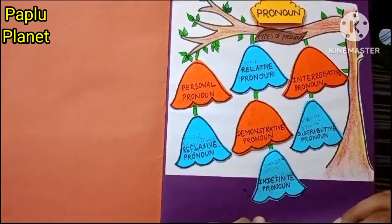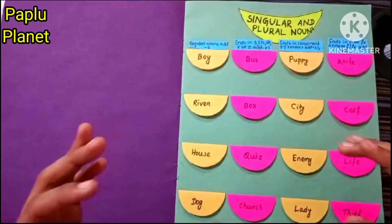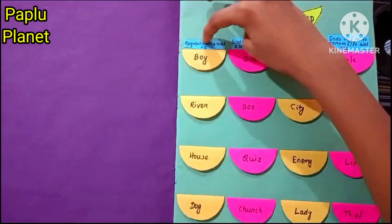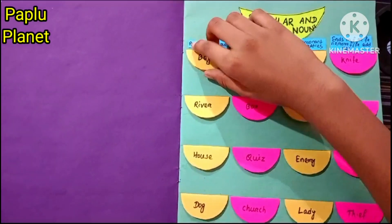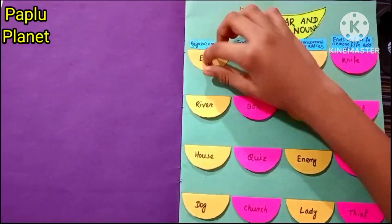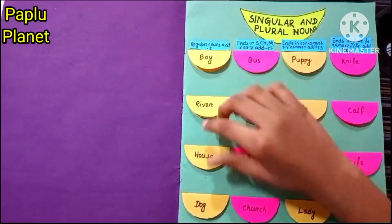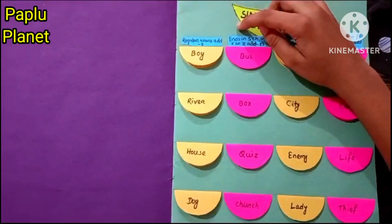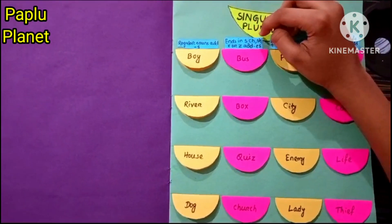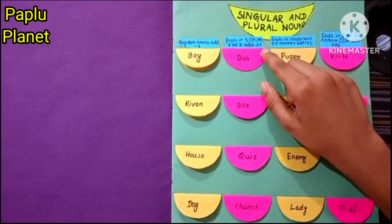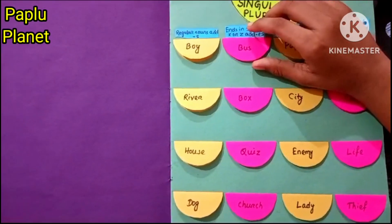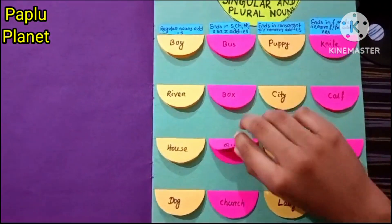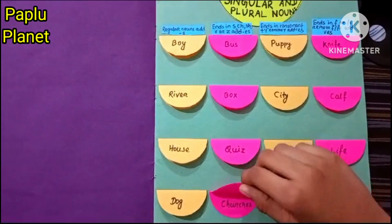Let's come to my other project: singular and plural nouns. Regular nouns — add S. For example: boy/boys, river/rivers, house/houses, dog/dogs. Ends in S, CH, SH, X, or Z — add ES. For example: bus/buses, box/boxes, quiz/quizzes, church/churches. Ends in consonant plus Y — remove Y, add IES. For example: puppy/puppies, city/cities, enemy/enemies, lady/ladies.